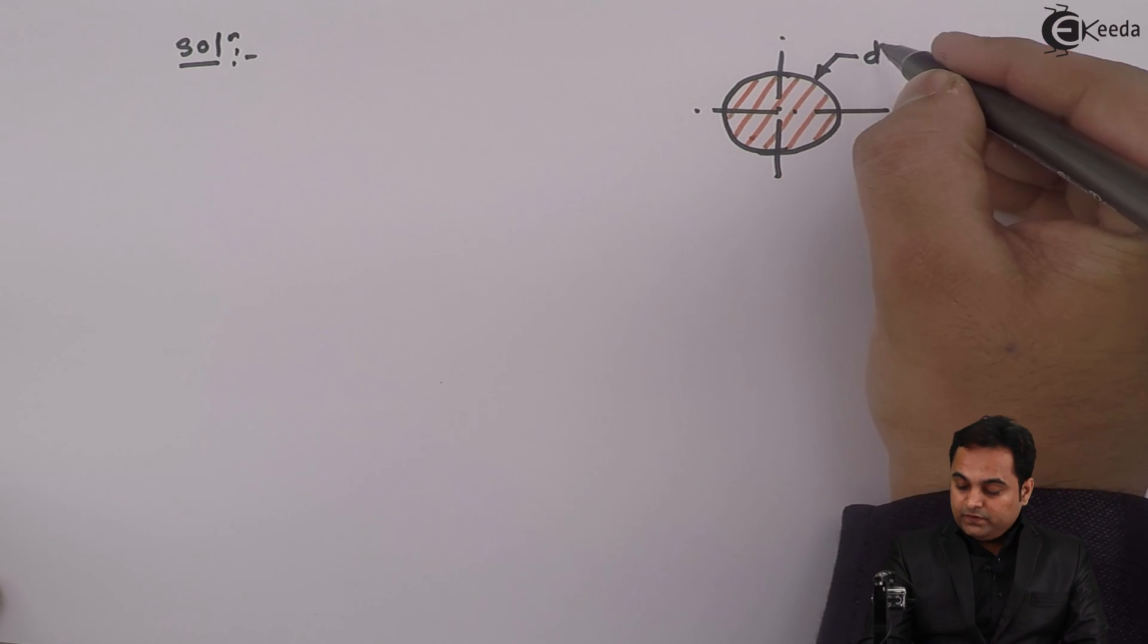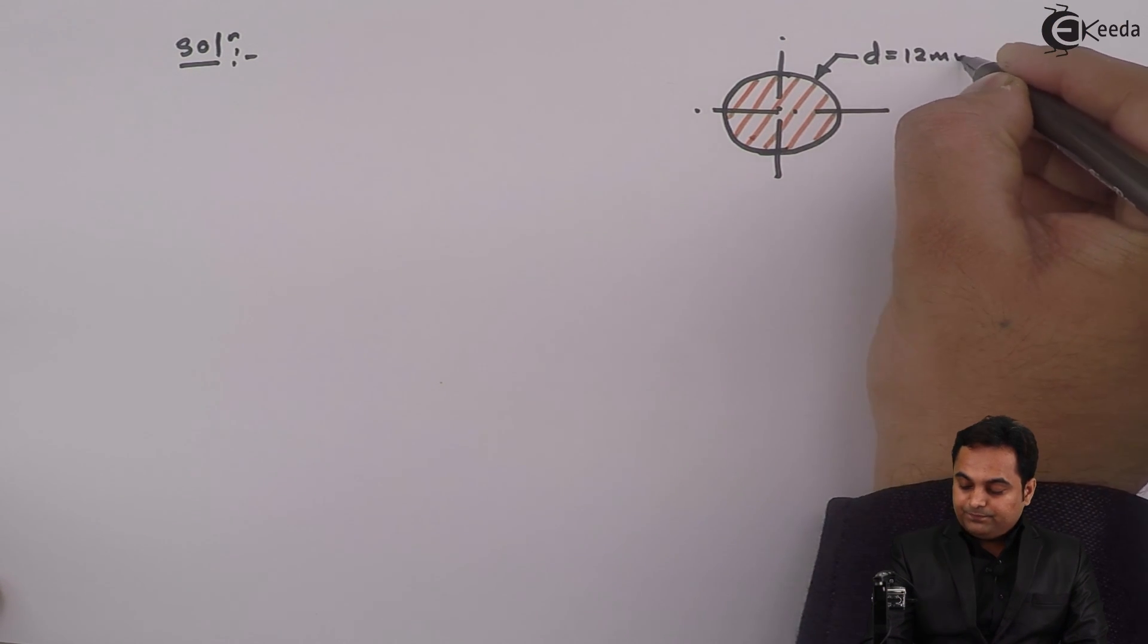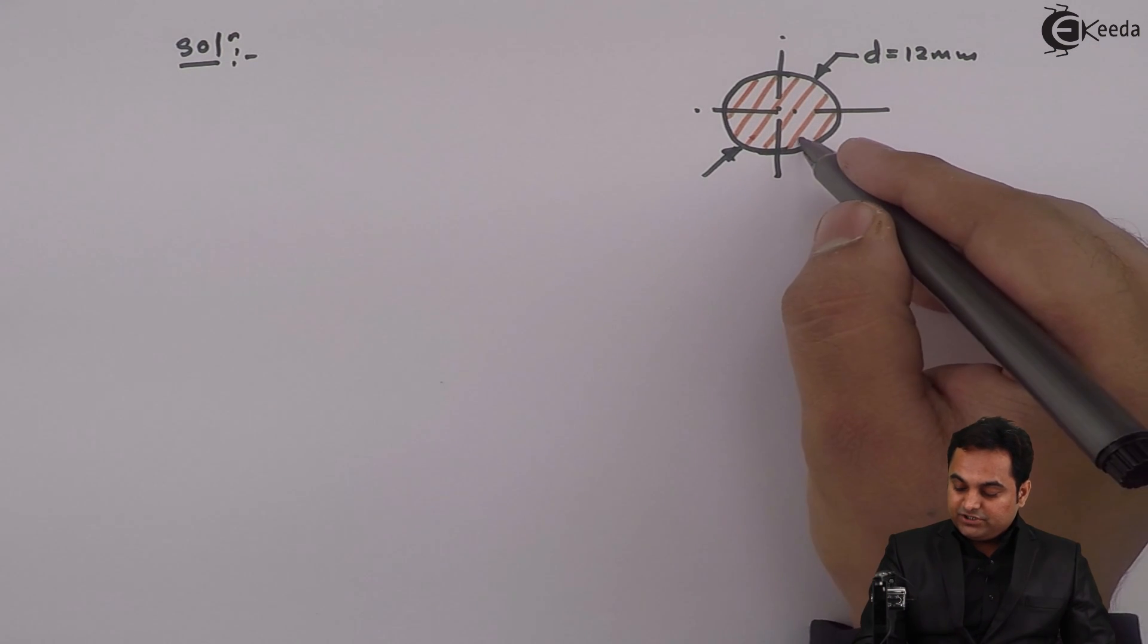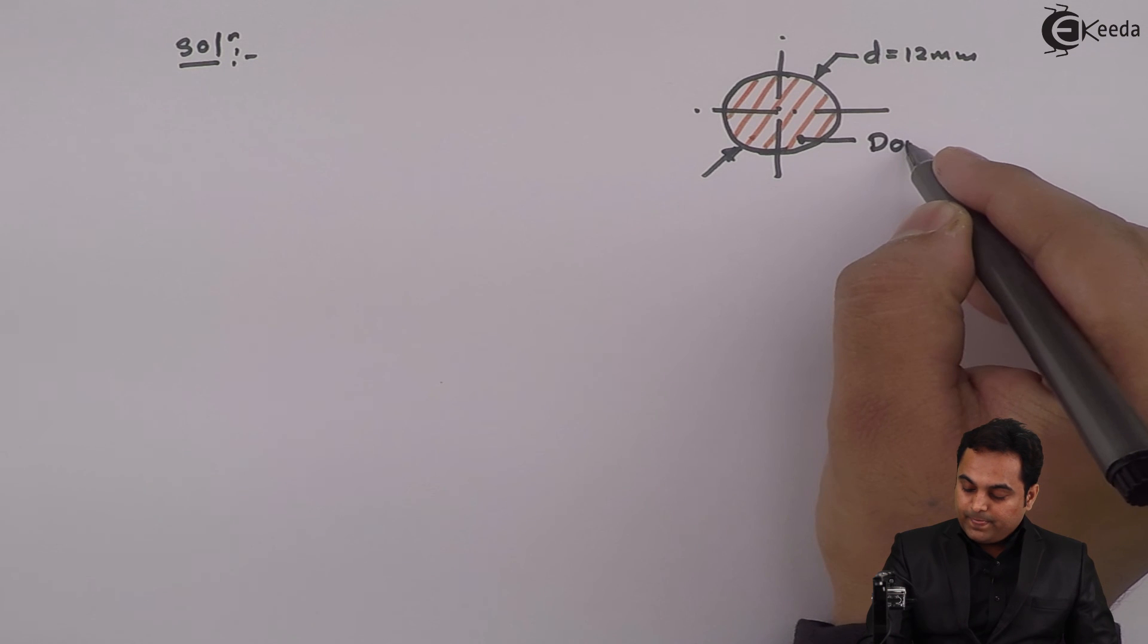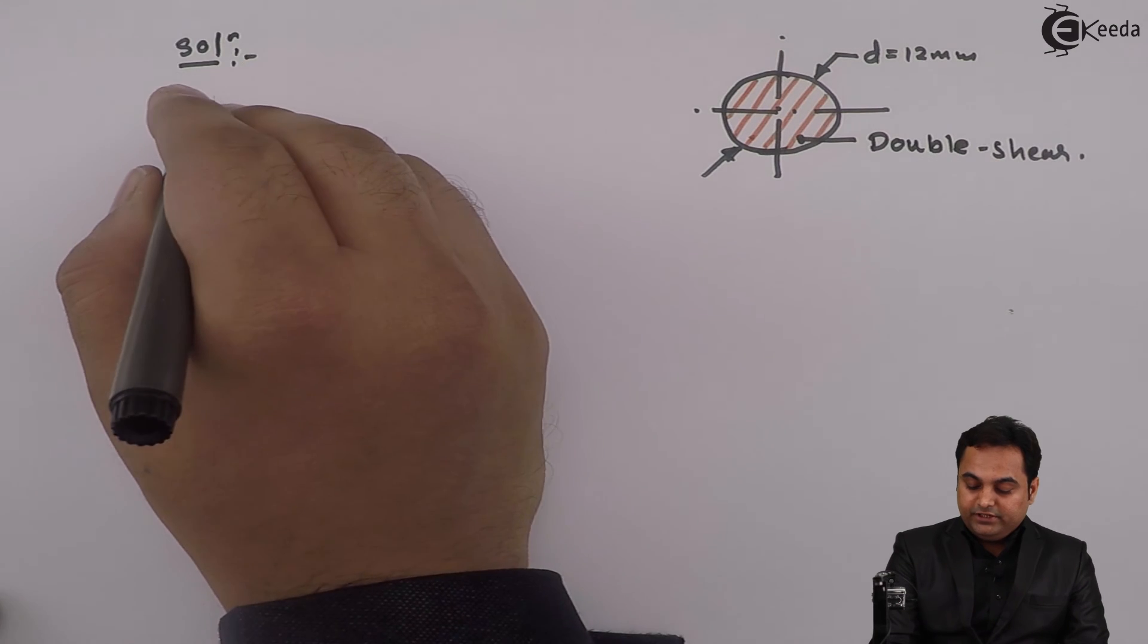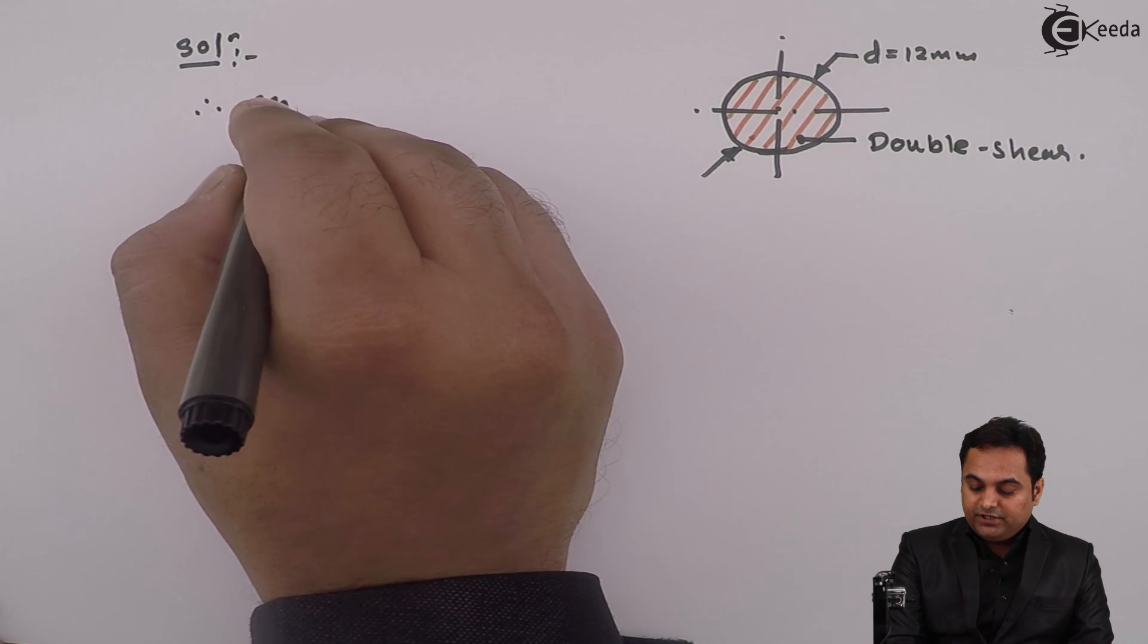Having diameter D equals 12mm, and since we have seen it is a case of double shear.